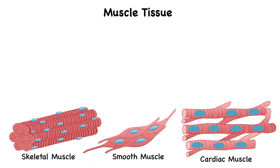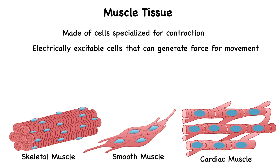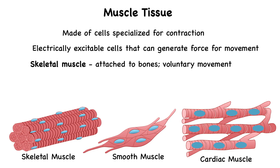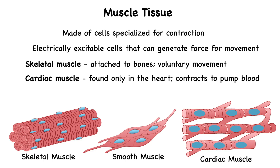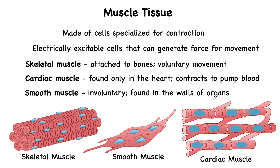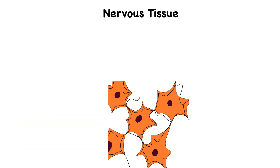Muscle tissue is made up of cells specialized for contraction. These cells are electrically excitable, allowing them to generate force for movement. Muscle tissue helps us move, maintain posture, and produce heat. There are three types of muscle tissue: skeletal muscle, which is attached to bones and responsible for voluntary movements; cardiac muscle, which is found only in the heart and is involuntary, contracting to pump blood; and smooth muscle, which is also involuntary and found in the walls of organs like the intestines and blood vessels.